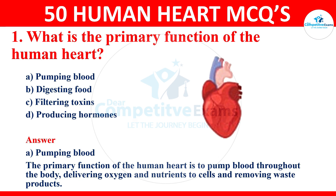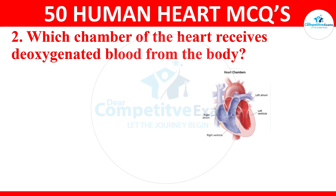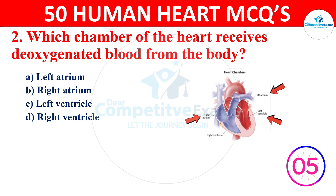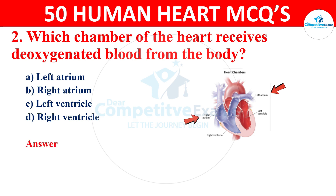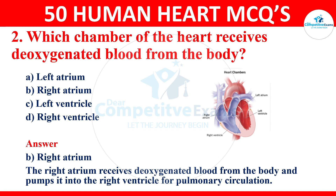Question 2: which chamber of the heart receives deoxygenated blood from the body? Your options are left atrium, right atrium, left ventricle, or right ventricle. The right answer is B, right atrium. The right atrium receives deoxygenated blood from the body and pumps it into the right ventricle for pulmonary circulation.